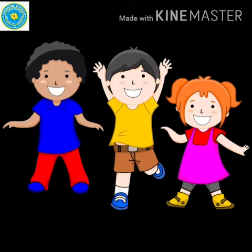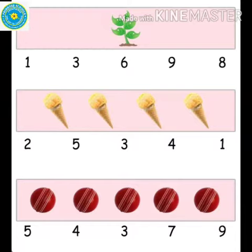Hello children, good morning. In today's session we are going to learn to count and color the objects and numbers. Let's start. Now we are going to count how many plants are there in the first row. How many plants are there? One. Are you able to identify number one? Yes, then color it.